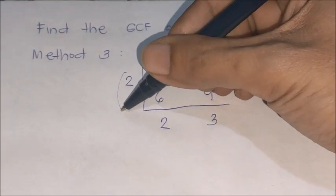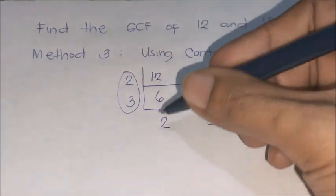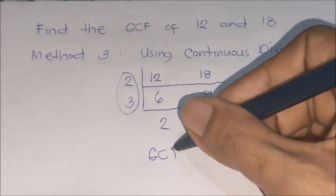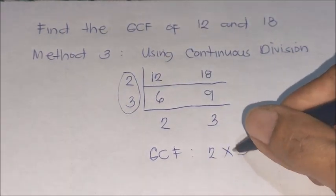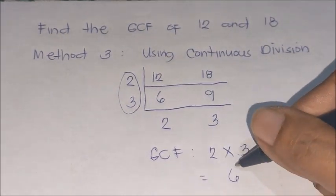Then, the numbers on the side are the GCF. We multiply them: 2 times 3. So, the GCF is 6.